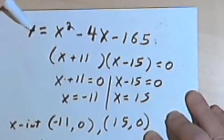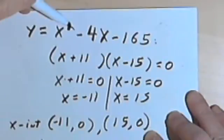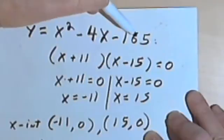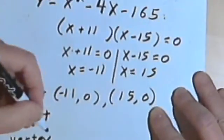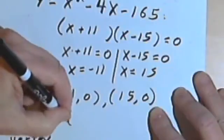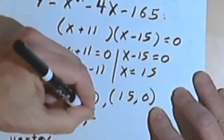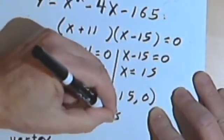then y equals 0 squared minus 4 times 0, both of those are just 0, minus 165. So the y-intercept is going to be at 0, negative 165.